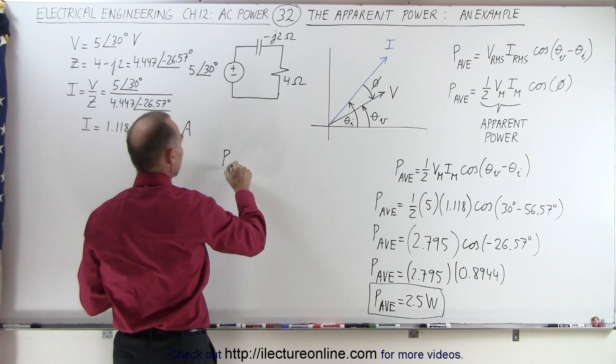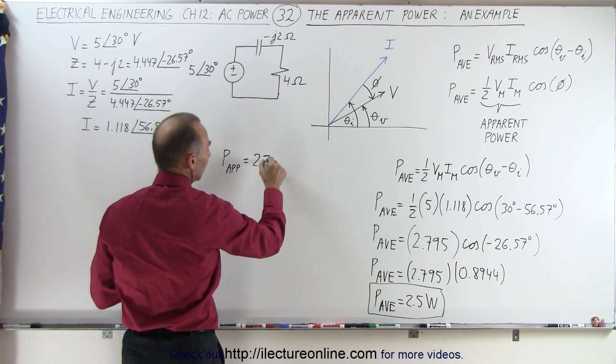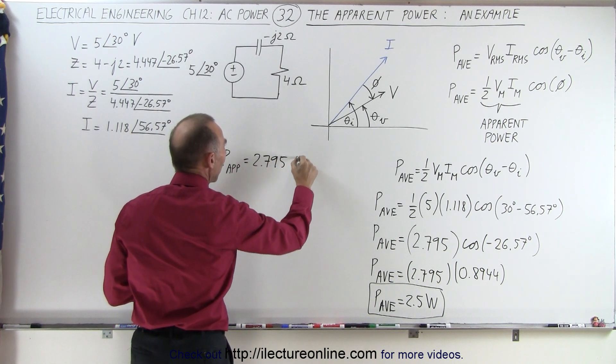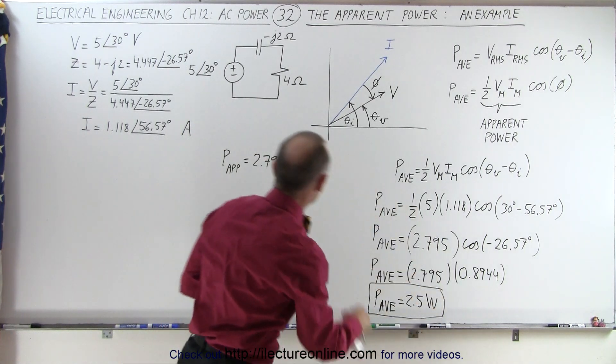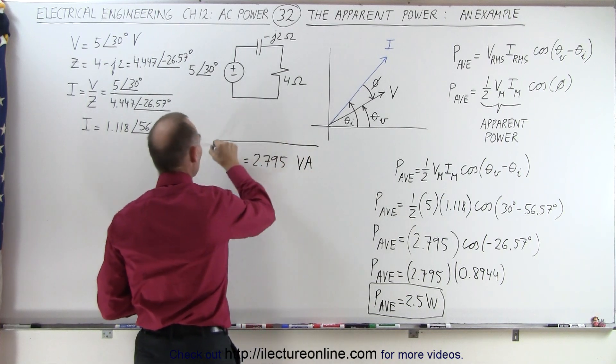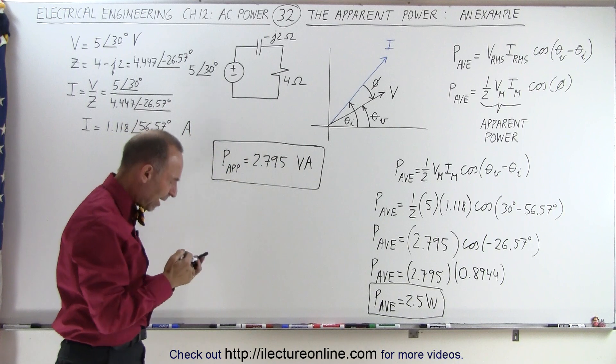So the apparent power is equal to 2.795. But instead of writing watts, we write volt amperes. That means volts times amps, and that is the proper unit for apparent power.